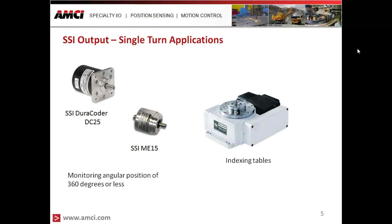So what are some typical applications for an SSI encoder? Just like with any encoder, you'll find them used in many applications — for example, indexing tables in a manufacturing environment where we have a rotary table doing part assembly and we need to know exactly where that part is as it goes through its cycle. We can put an encoder on there and monitor the shaft position and table position relative to part placement.